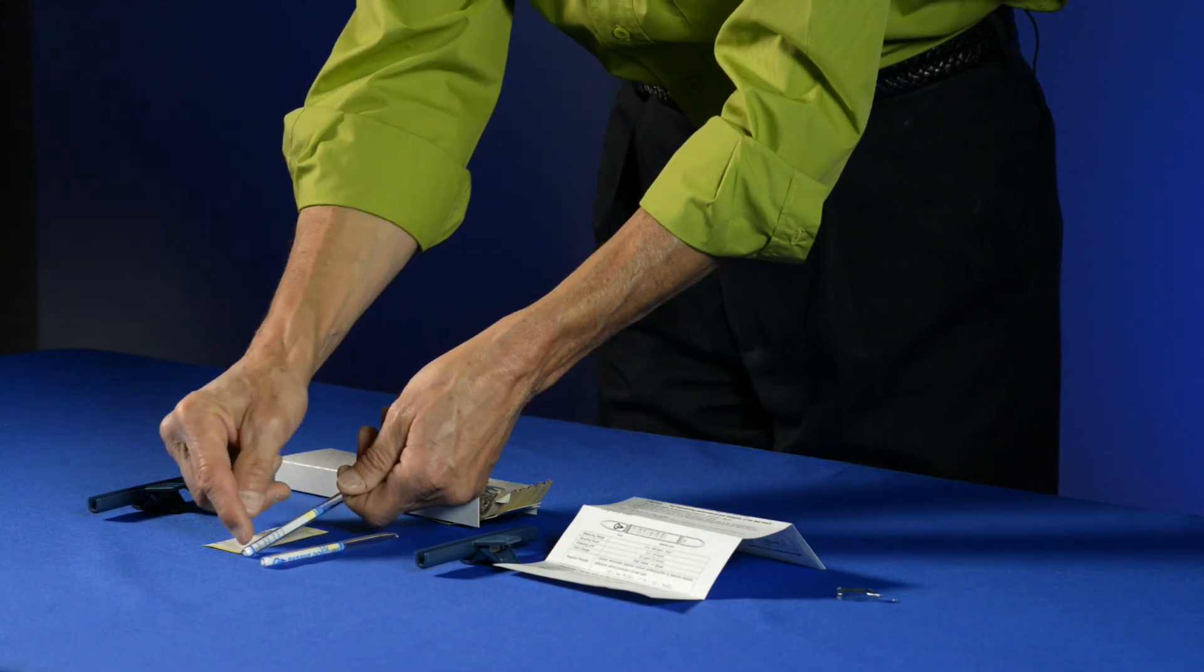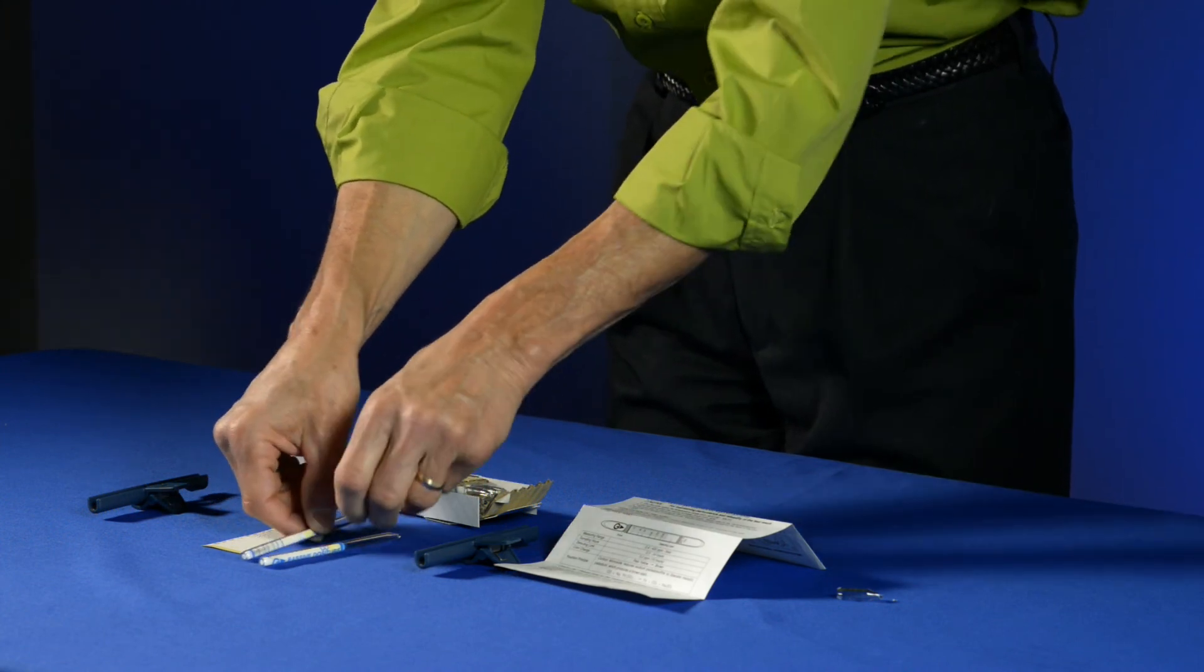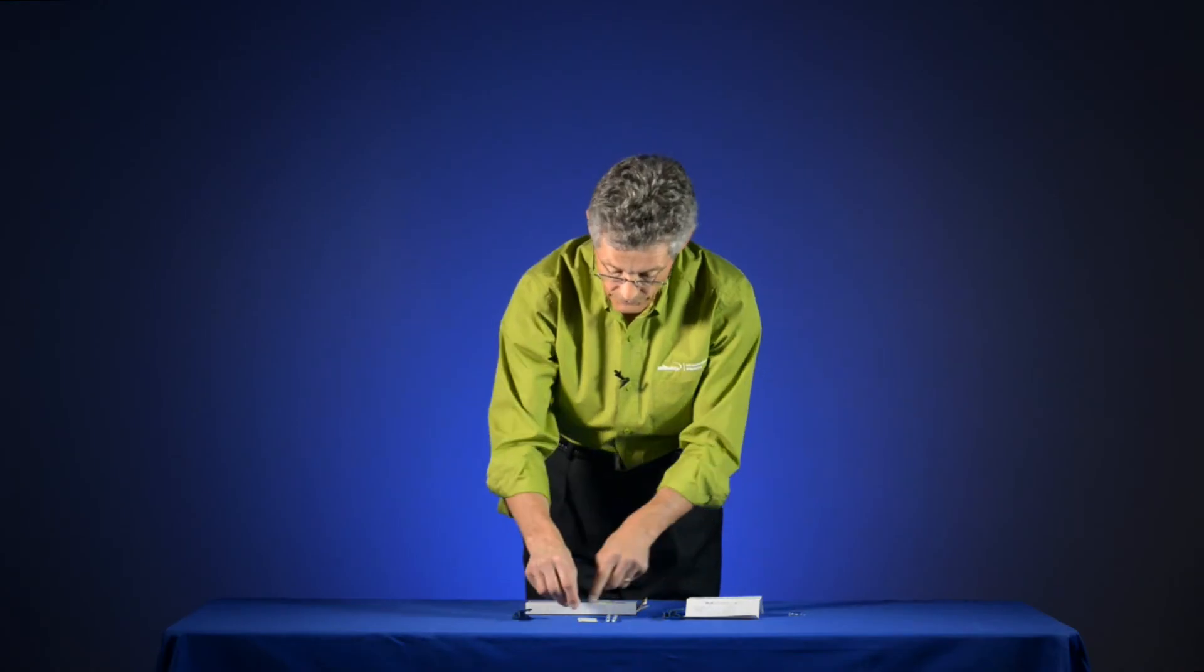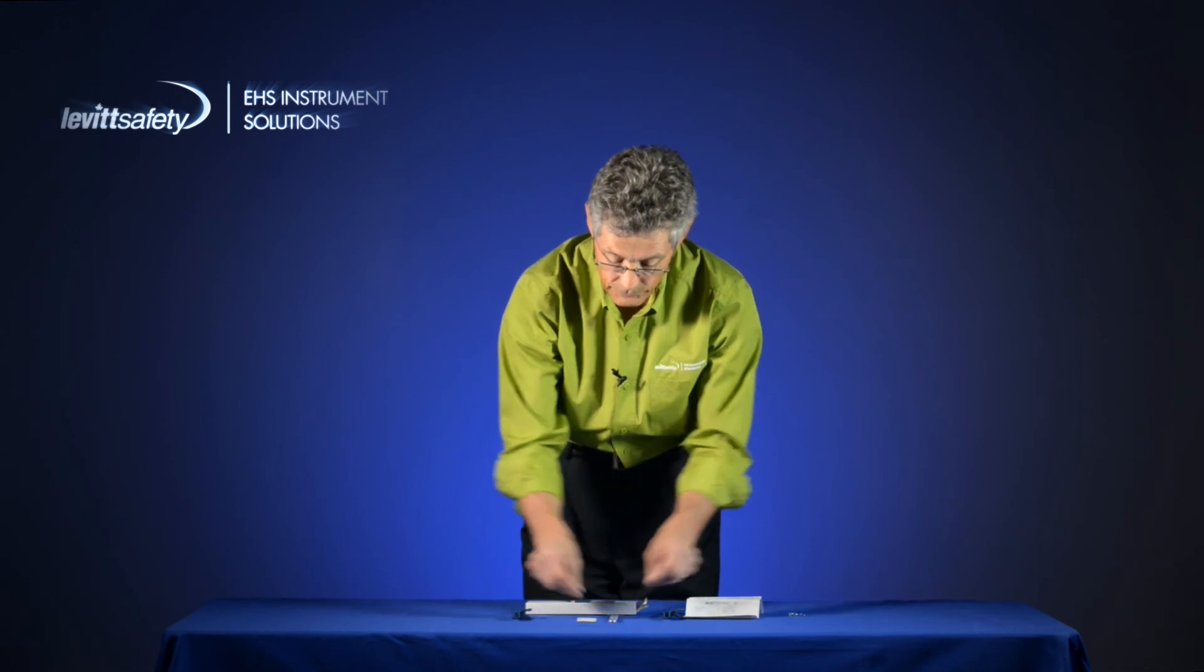So the graduation scale could go up to 200 ppm. Once you go past 200, of course it's outside of the measuring range of the device. Once you record that value, you can actually write it onto this card and then you keep a record of your results.